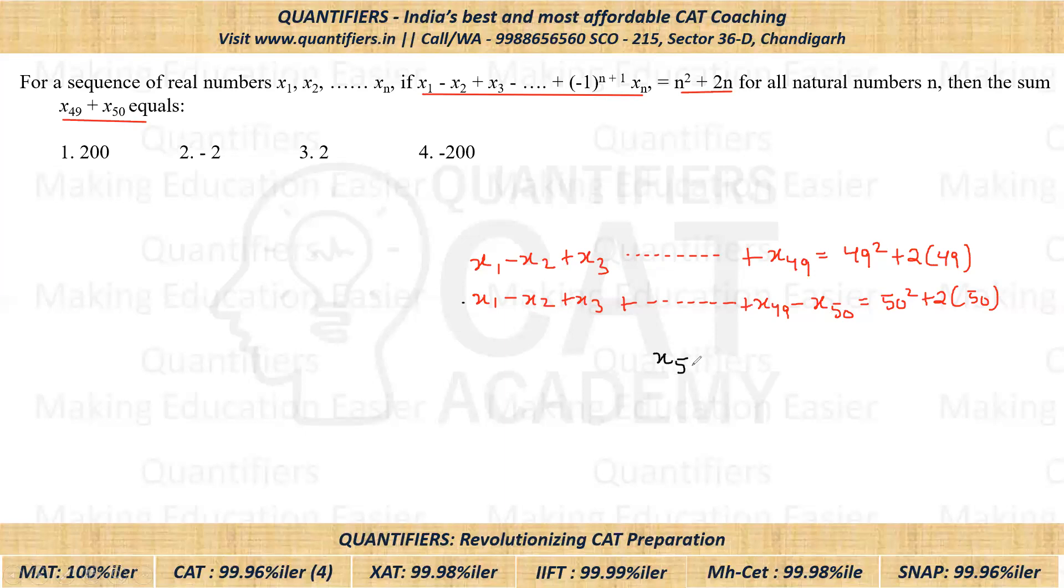So that would be x₅₀, which is equal to 49 square minus 50 square plus 2 times 49 minus 2 times 50. So here students 49 square minus 50 square, we can apply the formula a plus b, a minus b. A minus b here is minus 1. A plus b is 99. So we'll get negative of 99. And if we take 2 common further, we'll get 2 times 49 minus 50. So that would be negative of 2, which will give us negative of 101.